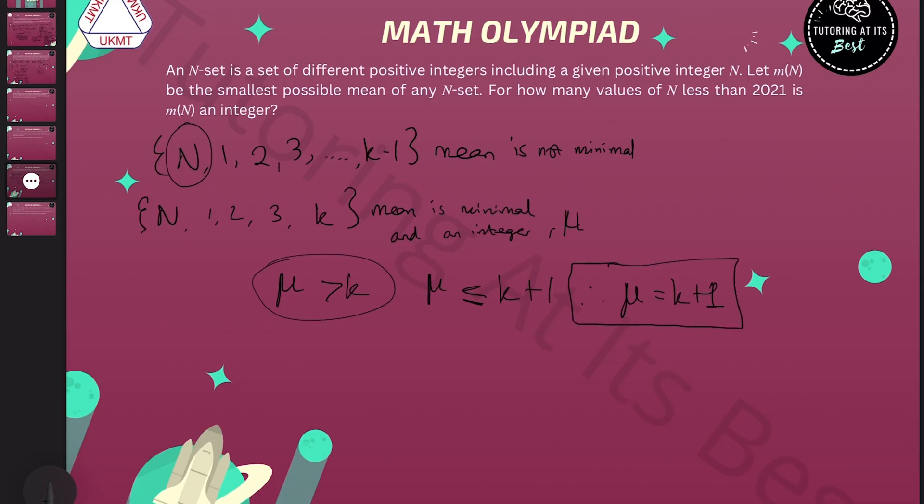Now we know what the n-set of the minimum mean is, and we know what the mean will be. We can take this set as one, two, all the way up to k, and we'll know this gives us k plus one. What will this tell us about n?